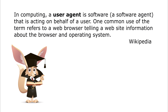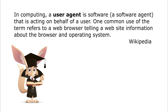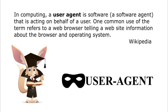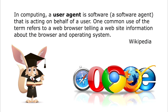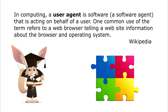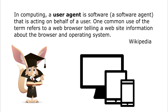User agent is the data which the browser sends to the server. The data contains information about the browser, its version, language, plugins, your operating system, the type of device you use to access the internet — a smartphone or an iPad — as well as the functions your browser supports.